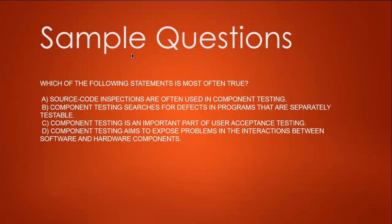Next question: which of the following statements is most often true? A - source code inspections are often used in component testing, B - component testing searches for defects in programs that are separately testable, C - component testing is an important part of user acceptance testing, D - component testing aims to expose problems in interaction between software and hardware components.